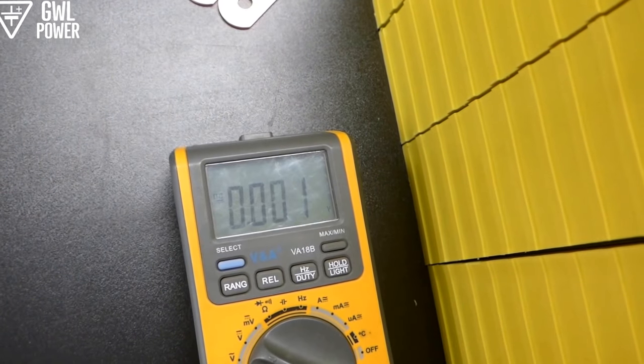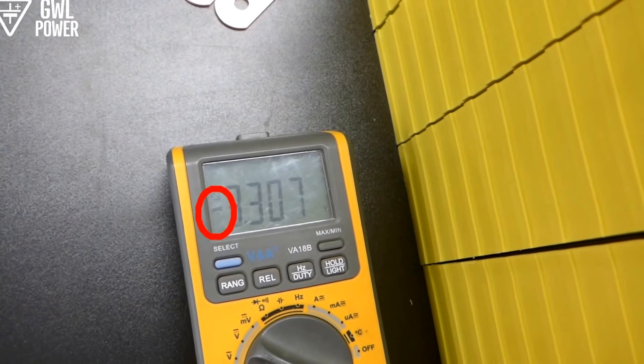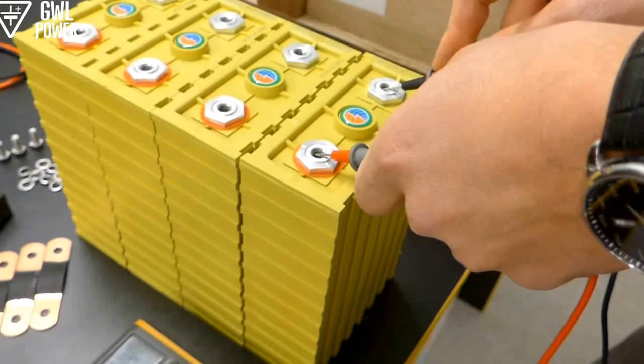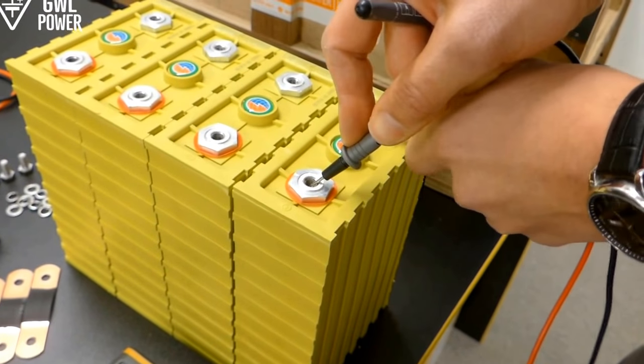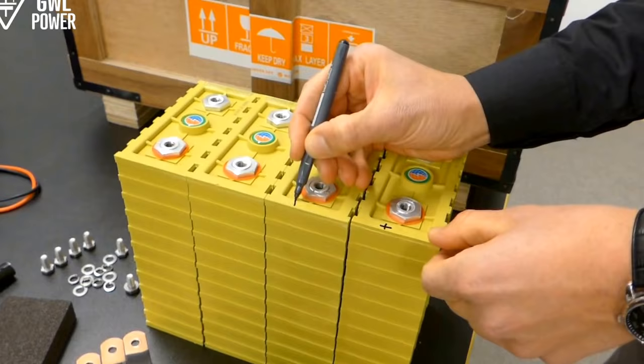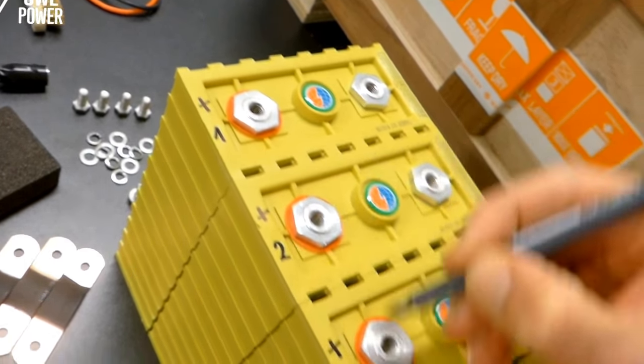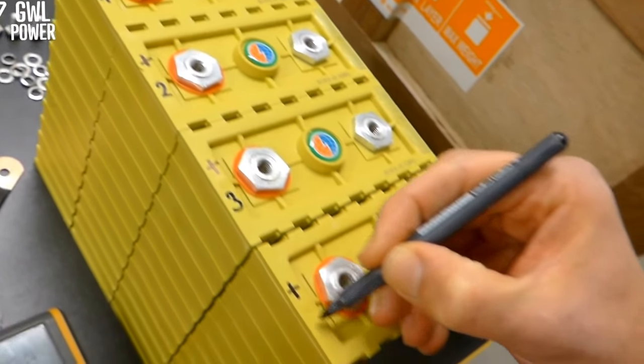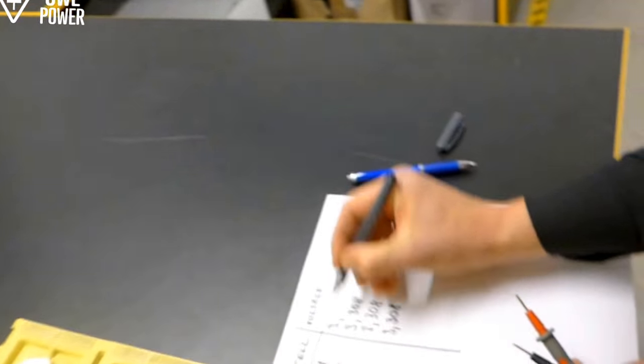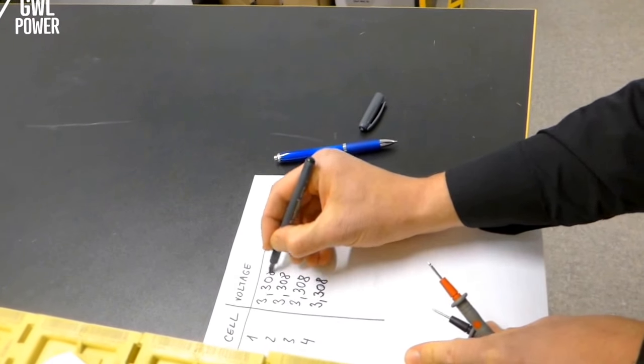We recommend to mark the plus terminal, simply done by measuring voltage. Then we mark each cell with a unique number. Write the measured voltage to a checklist for later purpose.